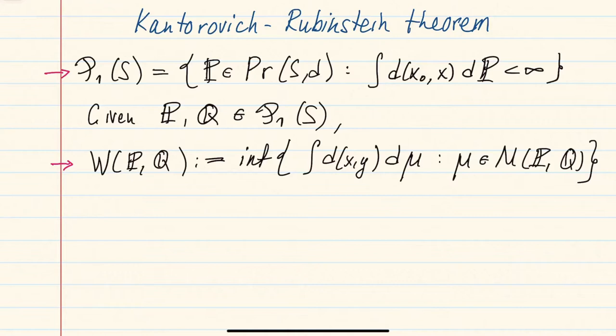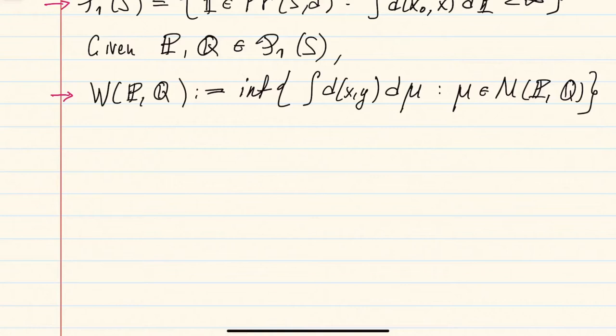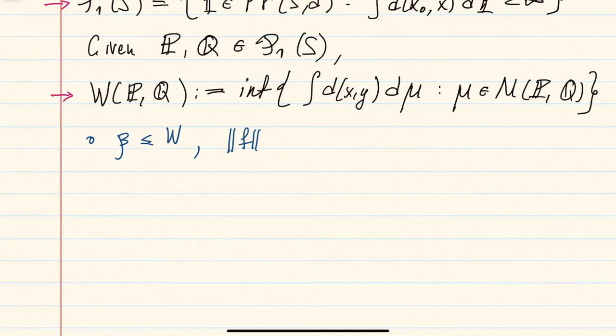To motivate the Kantorovich-Rubinstein theorem, let us recall a simple calculation from last time when we compared the bounded Lipschitz metric with the Wasserstein distance W. In that calculation we never used that the function is bounded, so it was enough to consider a Lipschitz function f with Lipschitz constant bounded by one, and any measure mu with marginals p and q.